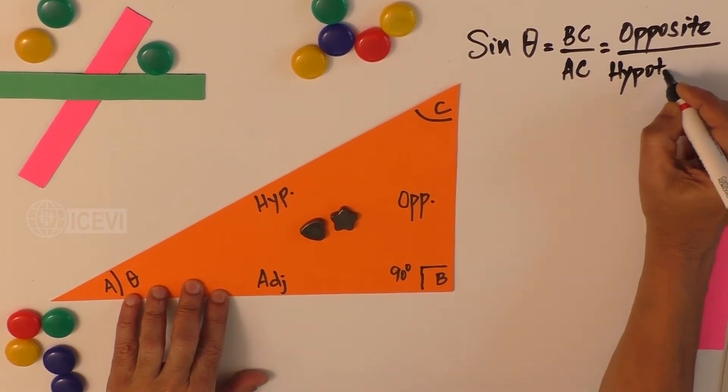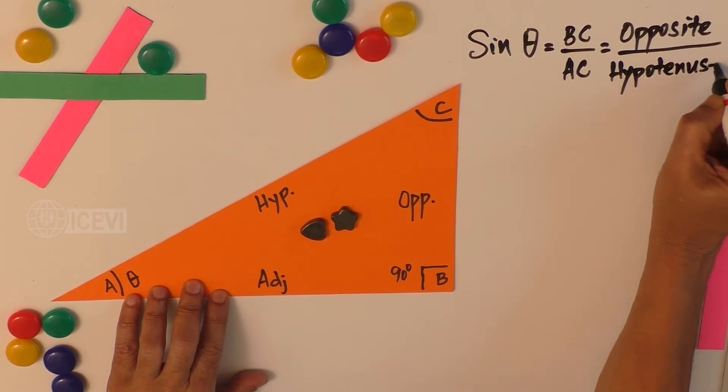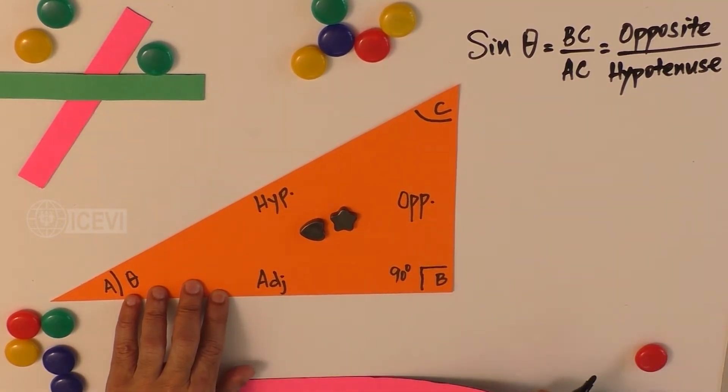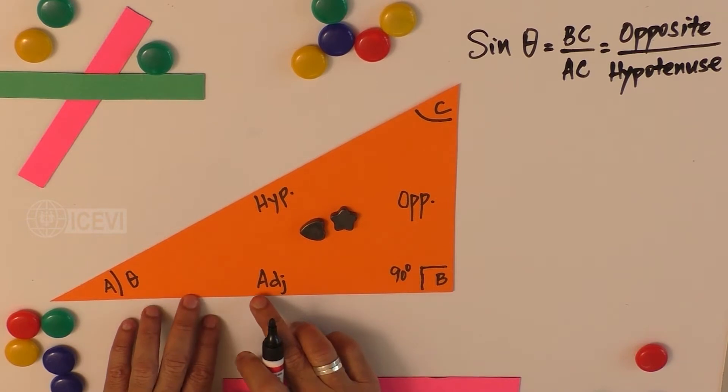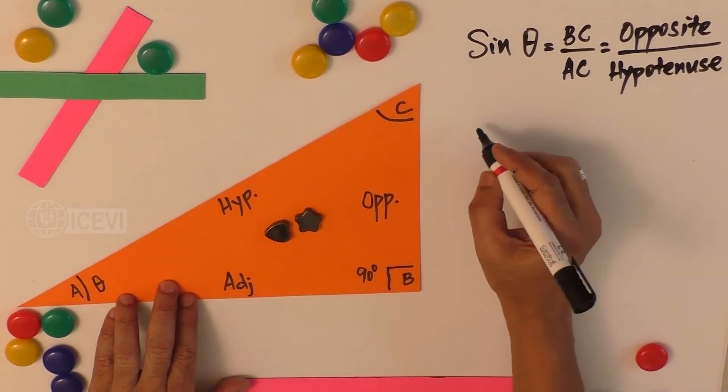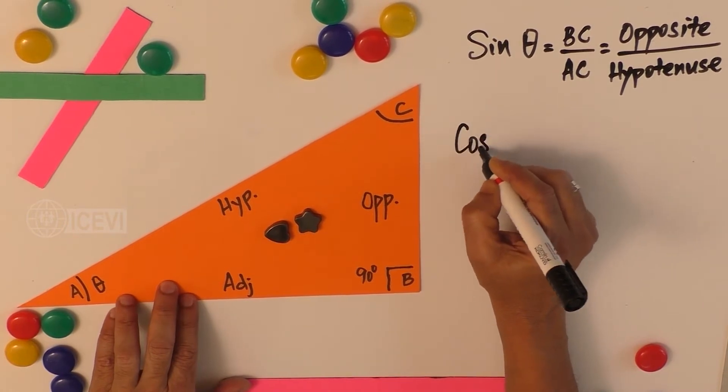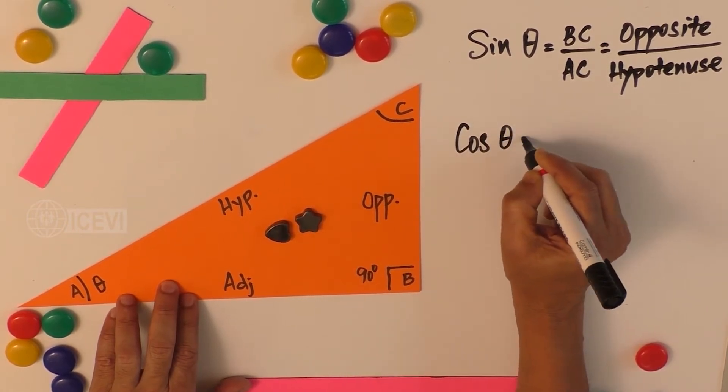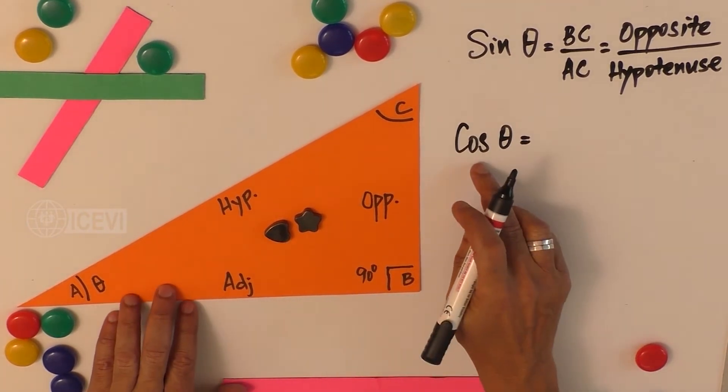Now let us take the other trigonometric ratios. So let us define cos theta.